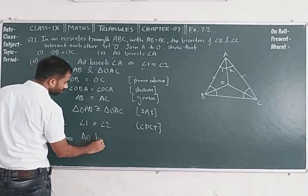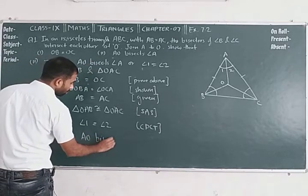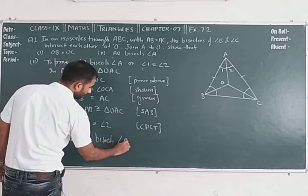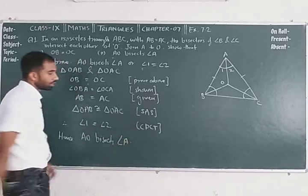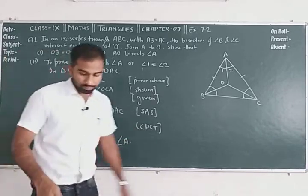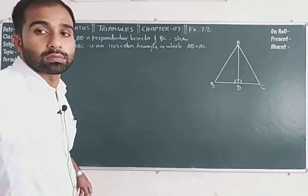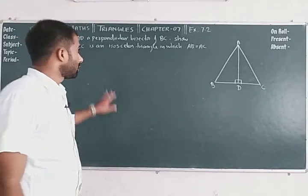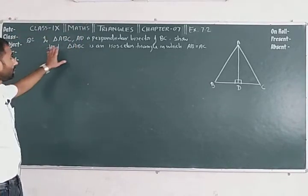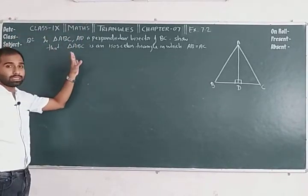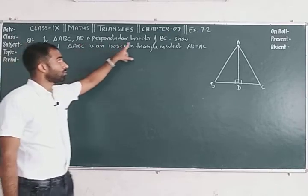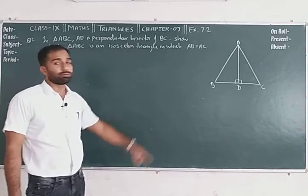I hope you understood. Now this is the second question. In triangle ABC, AD is the perpendicular bisector of BC.